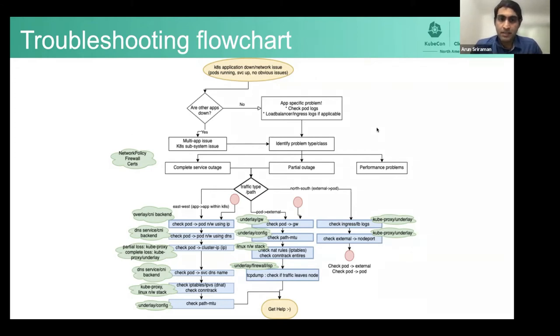Anyway, now coming back to that flowchart, if other apps are down, then look at your subsystem. Either case, what we need to do is to identify the problem type of the class. Like I said, is it partial complete or a performance degradation problem?